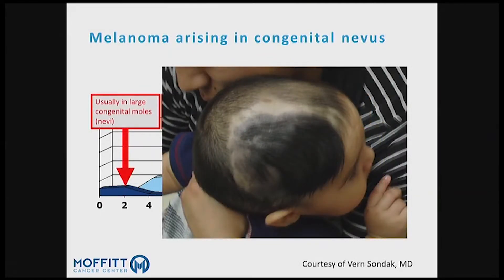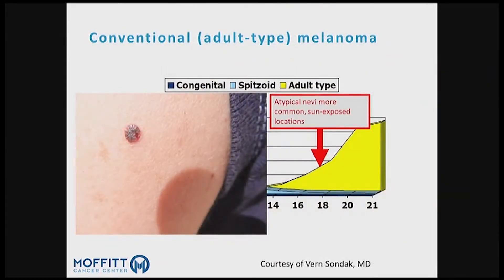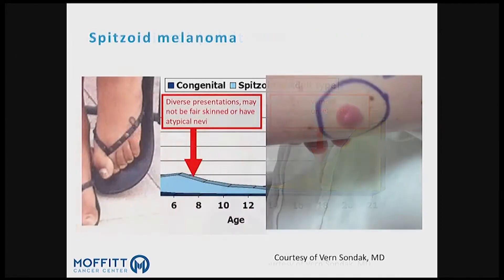Pictorially, this would be an example of a large birthmark that develops a melanoma within it. This would be a typical adult-type melanoma in an older adolescent. And these are a couple of examples of the spitzoid unusual ones — they just don't look like the pictures we showed.